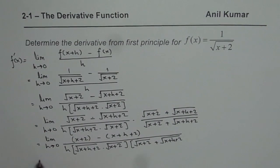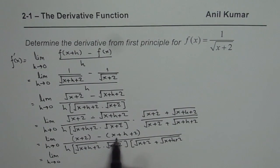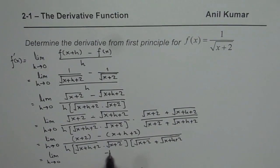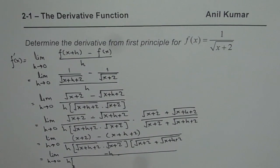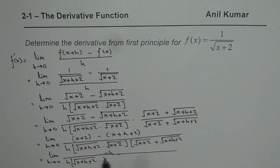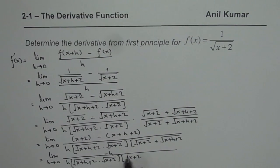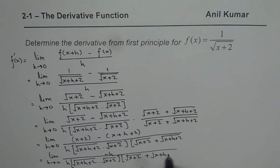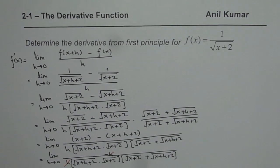Now if you simplify the numerator, you get limit as h approaches 0. x plus 2 minus x plus h plus 2 gives you minus h in the numerator, divided by h times square root of x plus h plus 2 times square root of x plus 2 times the sum square root of x plus 2 plus square root of x plus h plus 2. We can now cancel out h from numerator and denominator, then substitute h equals 0 to find the limit.